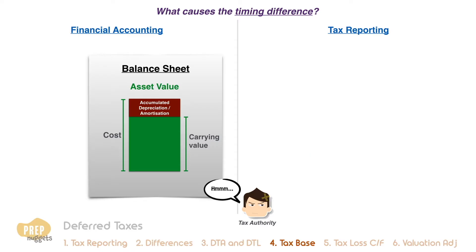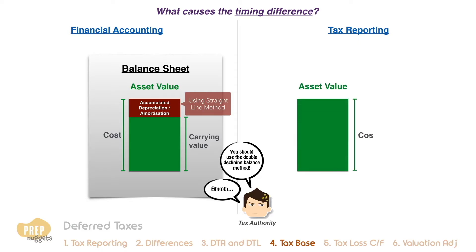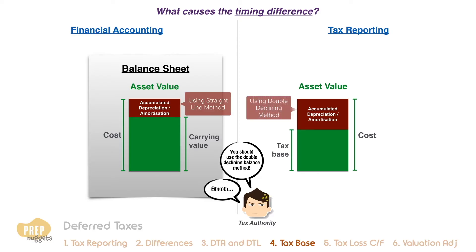For example, the accountant decides that the best treatment for depreciating an asset is to use the straight-line method with no residual value. The taxman, on the other hand, says only the double-declining balance method is allowed. So under tax reporting, the amount of depreciation is higher in the initial years. The value of the asset less the accumulated depreciation under tax reporting is the tax base of the asset.